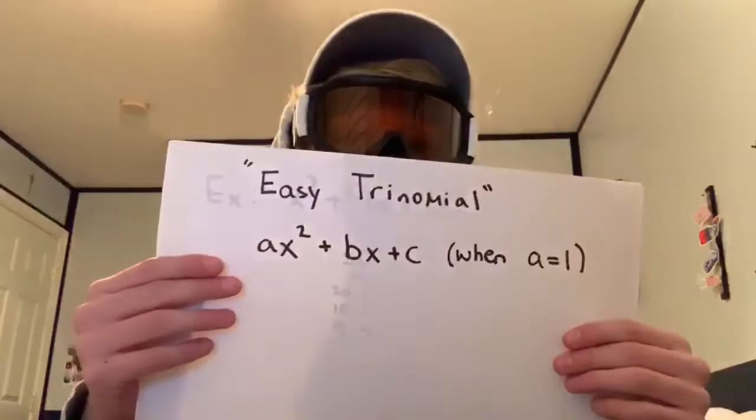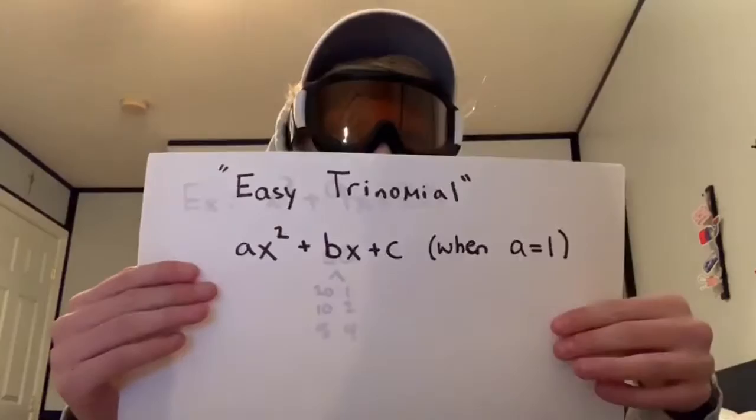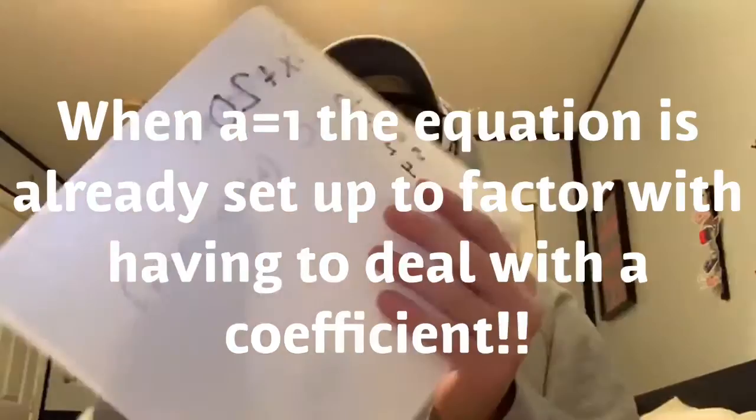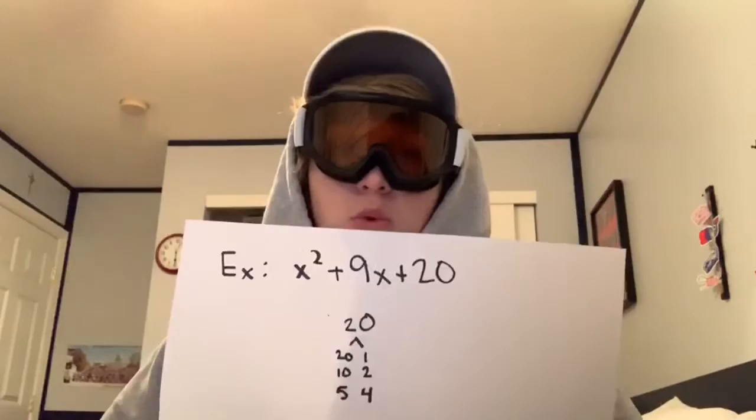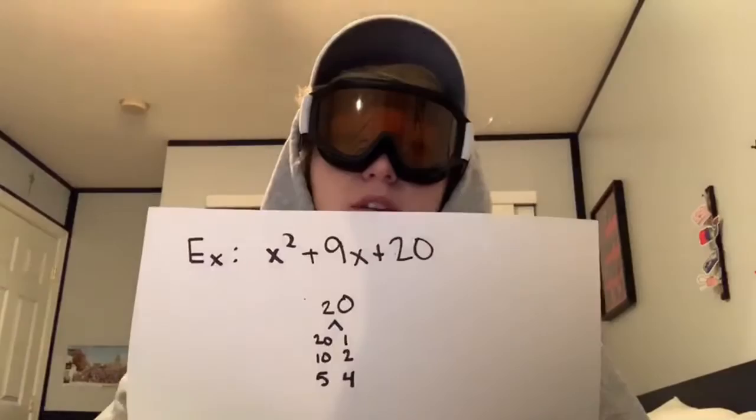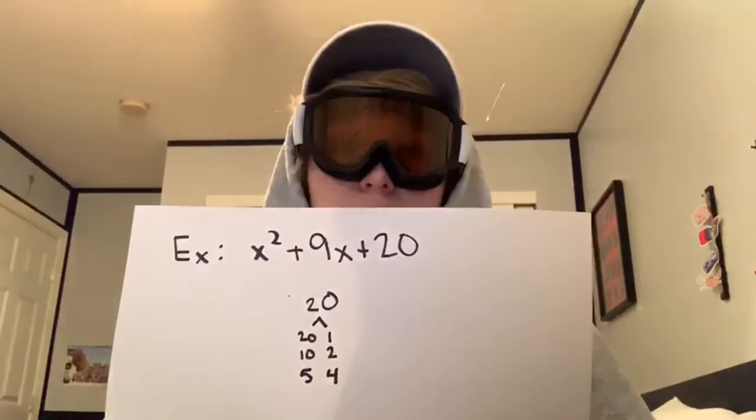Today I'm going to be teaching you how to solve what is known as an easy trinomial in the world of factoring. An easy trinomial is set up like ax squared plus bx plus c when a equals 1. This is called an easy trinomial because a equals 1, so there's not much work you have to do. An example would be x squared plus 9x plus 20. Since a equals 1, you just break down 20 into its factors and figure out which of those factors add up to equal the b value, which in this case is 9.